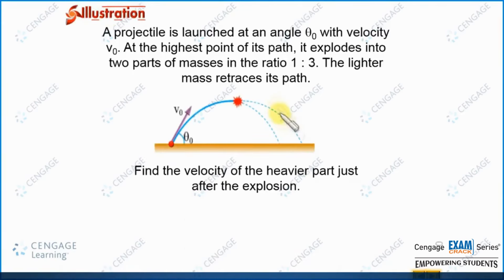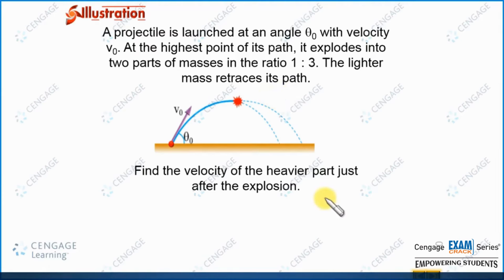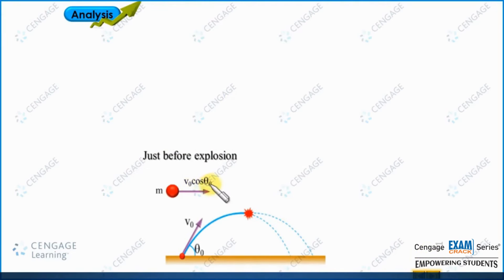At this point it explodes into two parts with mass ratio 1 is to 3. Let us assume the mass of the lighter part is m naught and the mass of the heavier part is 3 m naught. That means m naught equals m by 4 and the heavier mass 3 m naught equals 3 m by 4. The lighter mass of mass m naught retraces its path. That means the velocity of the lighter part should equal the velocity at the highest position, which is v naught cos theta naught, but in the left direction.